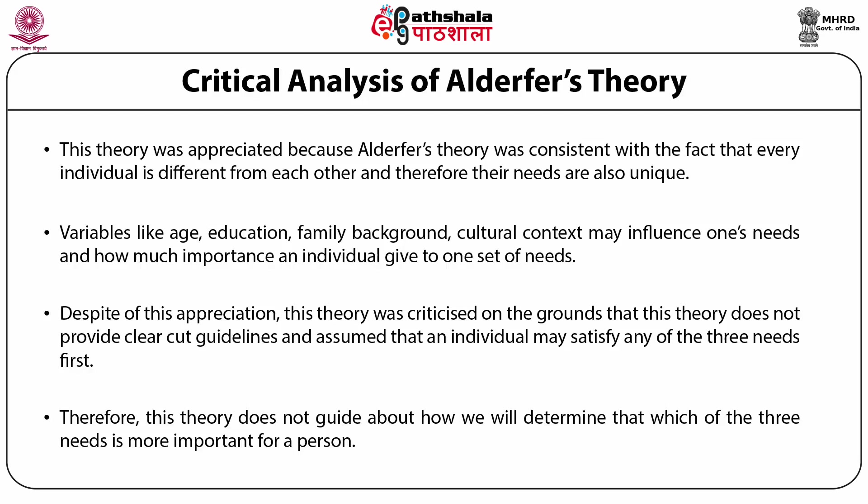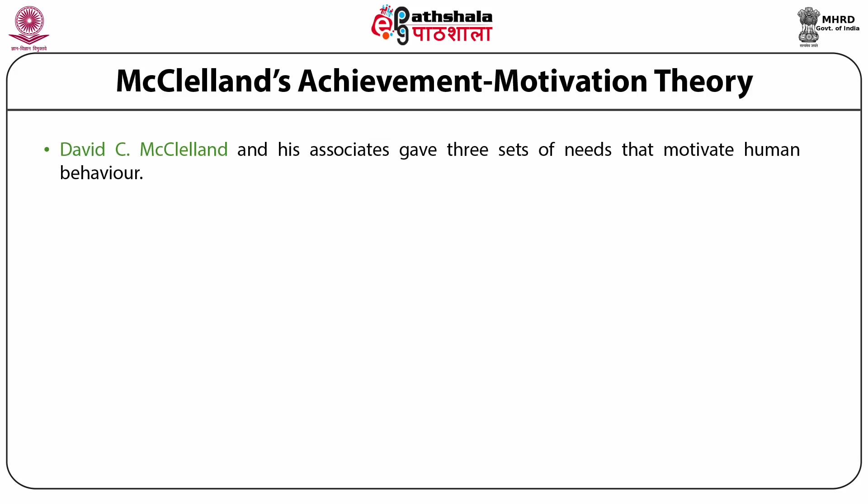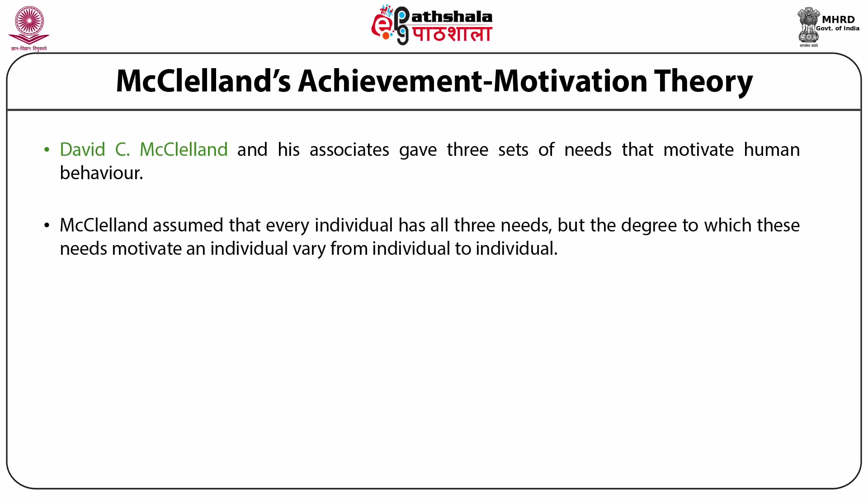The next content theory is McClelland's Achievement Motivation Theory, given by David McClelland. McClelland and his associates gave three sets of needs that motivate human behavior. McClelland assumed that every individual has three needs, but the degree to which these needs motivate an individual varies from person to person. The three needs are need for achievement, need for power, and need for affiliation.